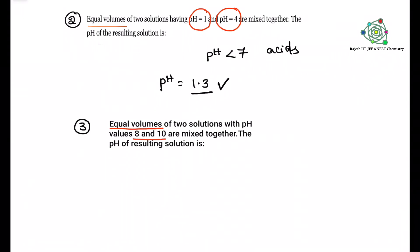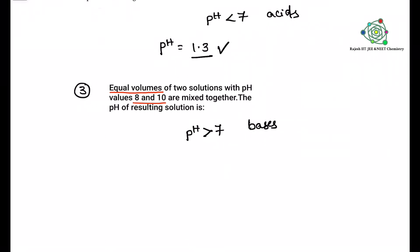Next third problem, equal volumes. And pH values are 8 and 10. That means 8 and 10 means more than 7. That means resultant solution is base.